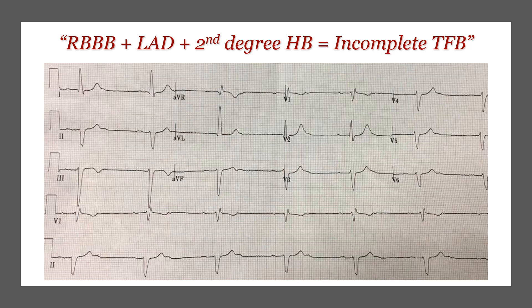Here is another example. We have an RSR' pattern with a broad complex — right bundle branch block. The axis shows lead one pointing up and AVF pointing down — left axis deviation. Looking at V1, we see: P, P, then a complex; P, P, then a complex. They map nicely — that is a second degree heart block. In summary, this is another incomplete trifascicular block.